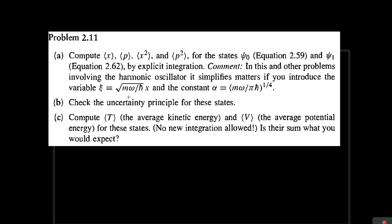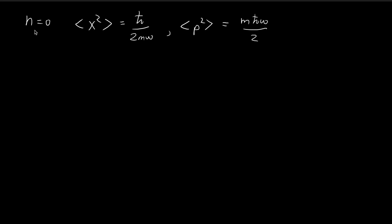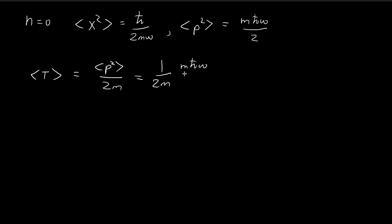We're going to find the expected value of kinetic energy and potential energy. For the zero-stationary state, the expected value of kinetic energy is given by the expected value of p² divided by 2m — that's the definition of kinetic energy. Substituting the result derived in part A, we find this equals ¼ ℏω.